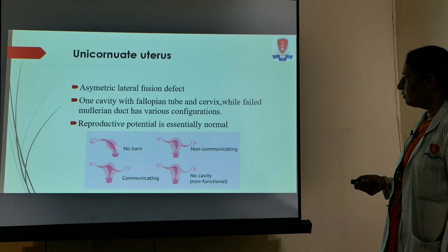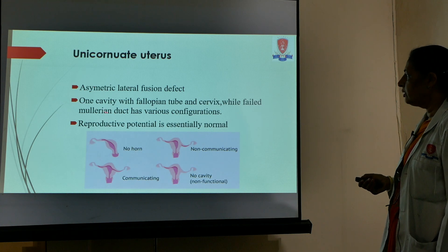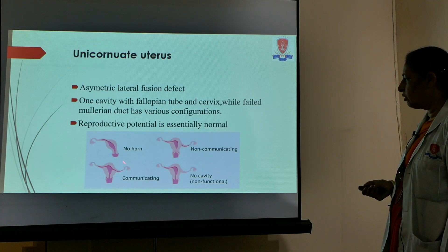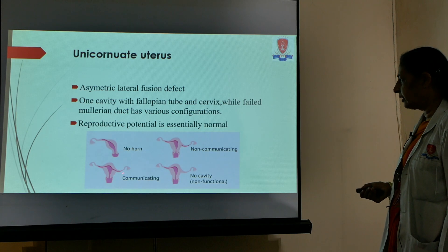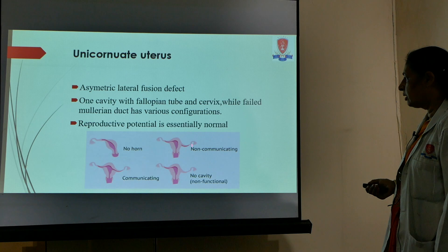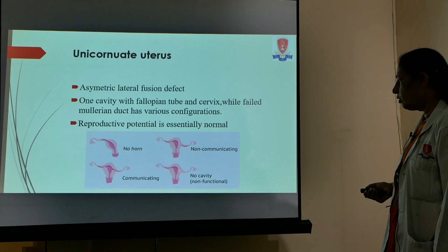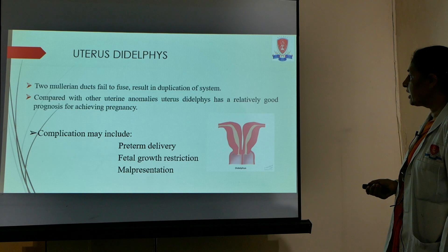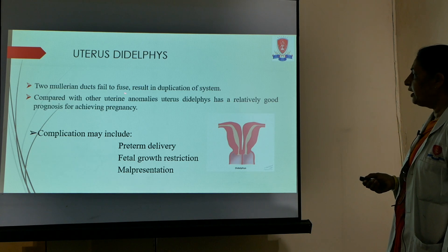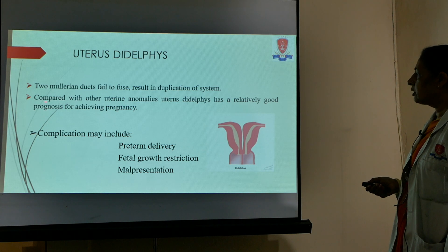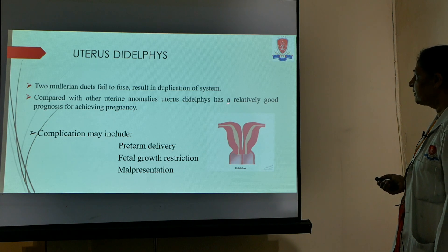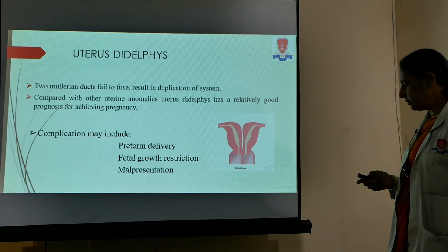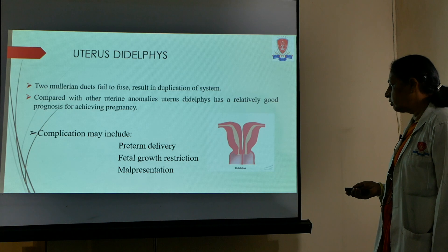Unicornuate uterus occurs when only one horn develops, resulting in asymmetrical lateral fusion with one cavity and one fallopian tube. There may be a rudimentary other horn present which can be communicating or non-communicating, or the horn may have no cavity. Uterine didelphys occurs when the two Mullerian ducts fail to fuse, resulting in duplication of the system. Compared with other uterine anomalies, uterine didelphys has a relatively good prognosis because two completely developed horns are present, though complications like preterm delivery, fetal growth restriction, and malpresentations still occur.